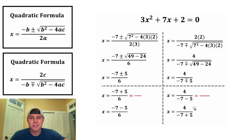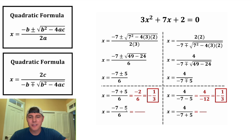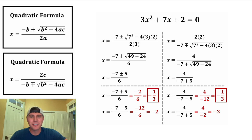So let's simplify these top two. Negative 7 plus 5 is equal to negative 2, over 6. And on the right-hand side, we have 4, and negative 7 minus 5 is negative 12. Both of these simplify to negative 1 third — they both gave the exact same answer. Let's put a box around it. Next, negative 7 minus 5 is negative 12, over 6. And on this side, 4 over negative 7 plus 5 is negative 2. Both simplify to negative 2. We got the exact same answer. Let's put a box around it.